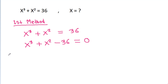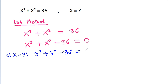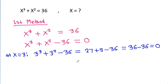And now, at x is equal to 3, it is 3 cubed plus 3 squared minus 36, that is equal to 27 plus 9 minus 36, and it is 36 minus 36, that is equal to 0. So, x is equal to 3 will be a solution.